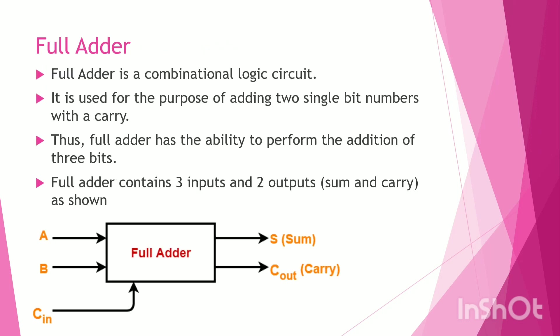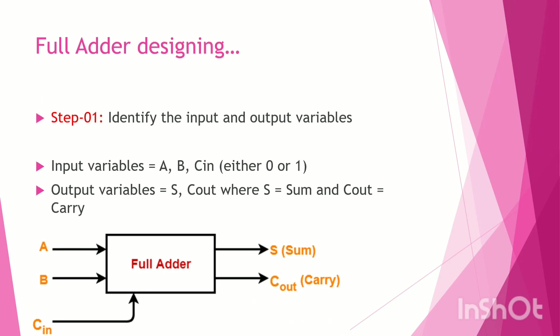So we need a Full-Adder to add 3 bits. A Full-Adder is also a combinational logic circuit used for adding two single-bit numbers with a carry-in. It has the ability to perform addition of 3 bits. The inputs are A, B, and C-in, and the outputs are Sum and Carry-out.